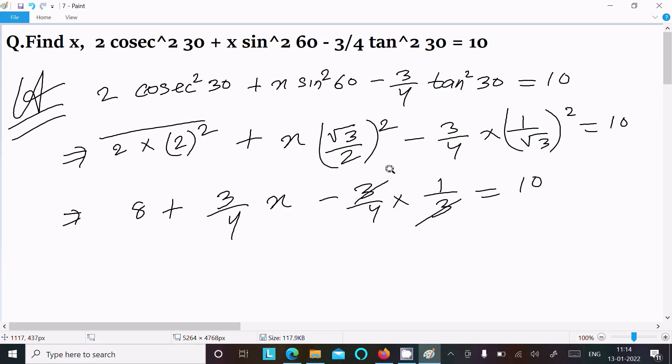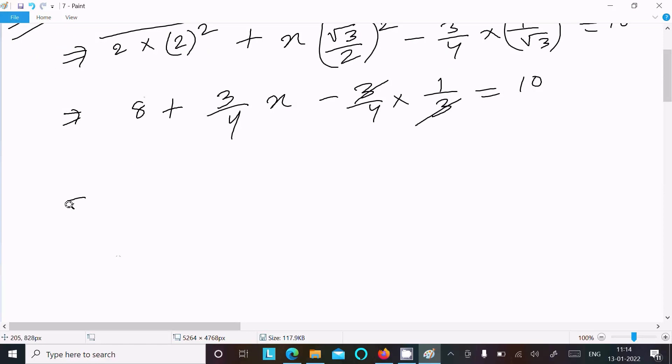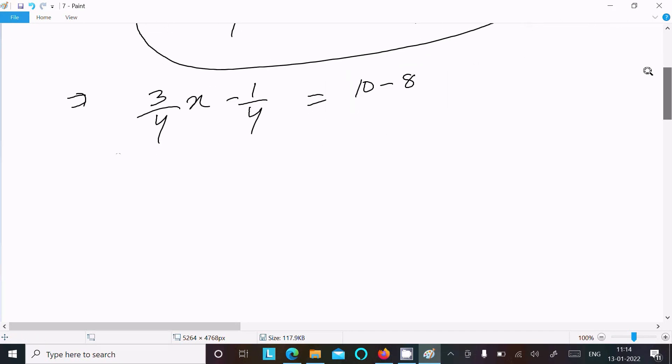So 3 cancels with 3. The 10 is moving to the other side, so we can write 3/4 x and 1/4, so this becomes 1/4.